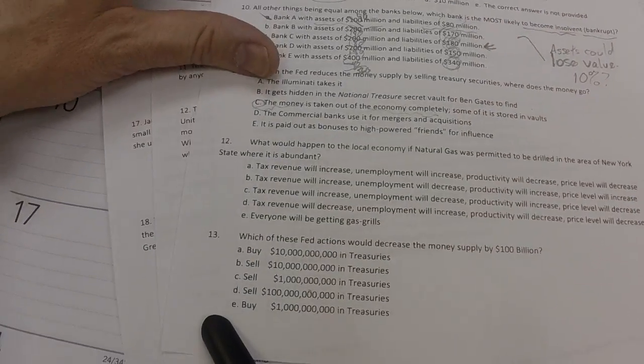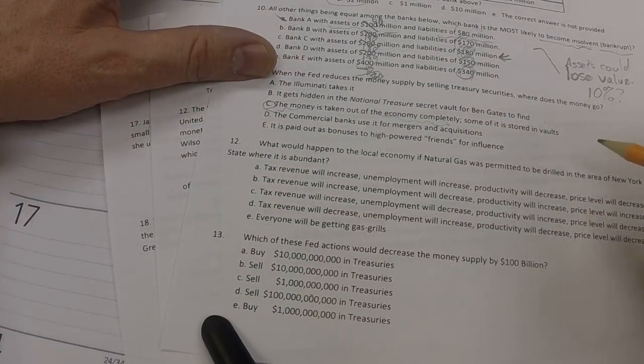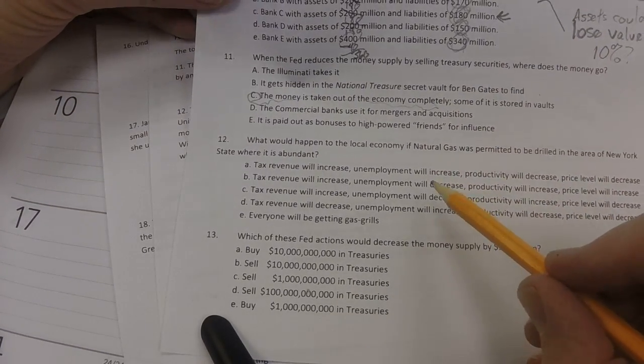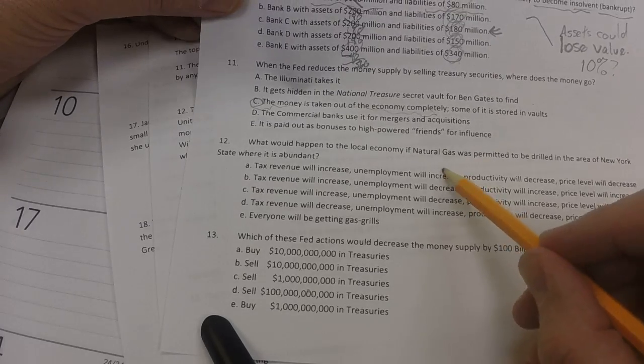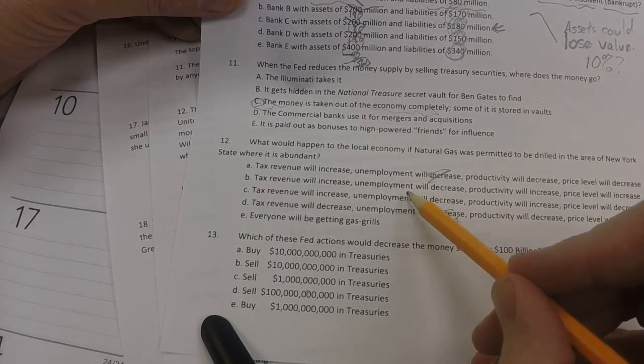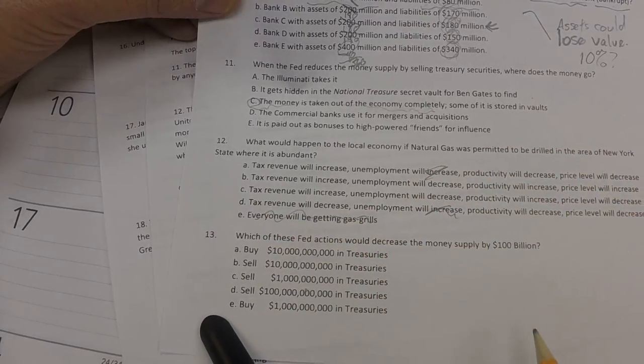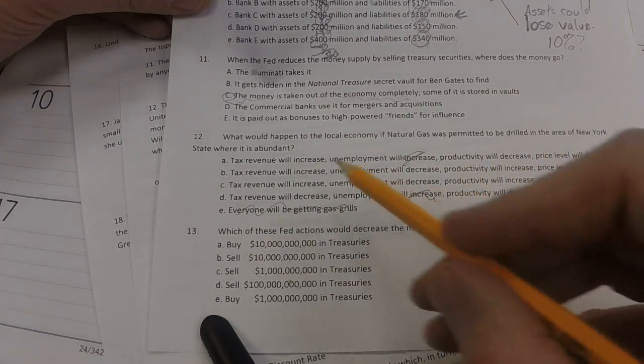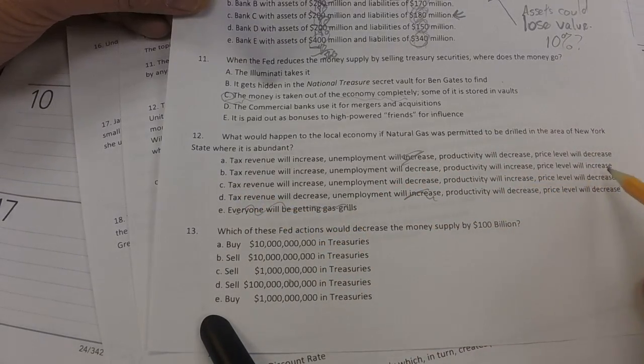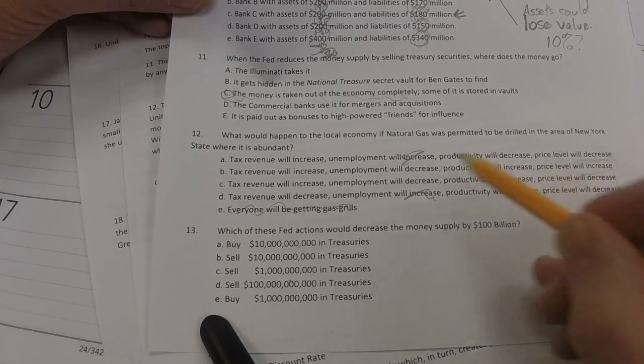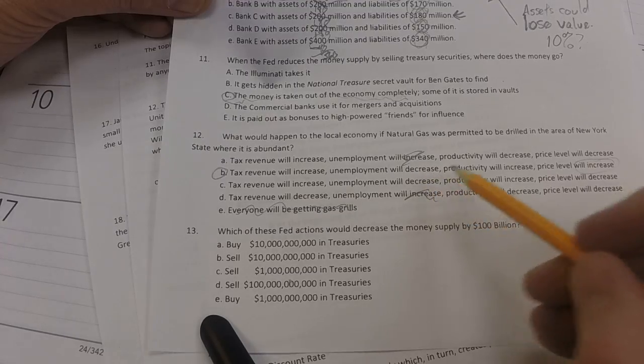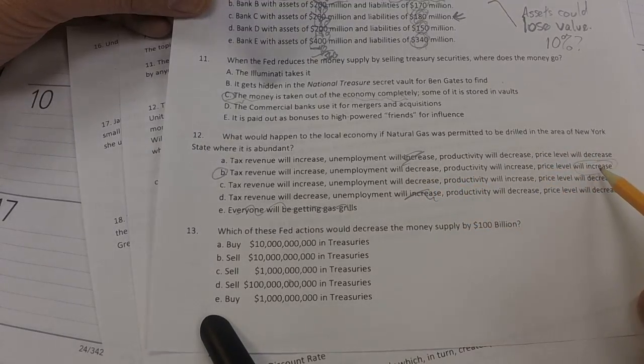Any increase in the money supply leads to those positive pieces. So, you can either get growth in the economy and higher GDP from discovery of new technologies or new resources, like the gold or oil, like in this question, or simply by increasing the money supply, like we've seen here. Well, to answer the question, if natural gas were permitted to be drilled in the area of New York State, where it's abundant, we would find that we're looking for unemployment will decrease. So, we're going to cross that one off. Unemployment will decrease. So, it's going to be one of these things. This is probably a gag answer right there. Let's take a look. It's either B or C. Productivity will increase. Good. That's true. Price level will, well, prices will rise, actually. So, it's going to be choice B. Tax revenue will increase. Yes. Unemployment will decrease. Yes. Productivity will increase and price level will increase.